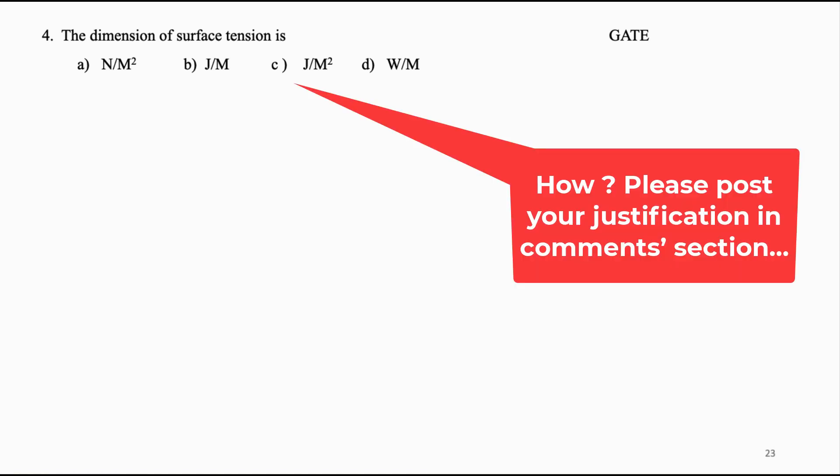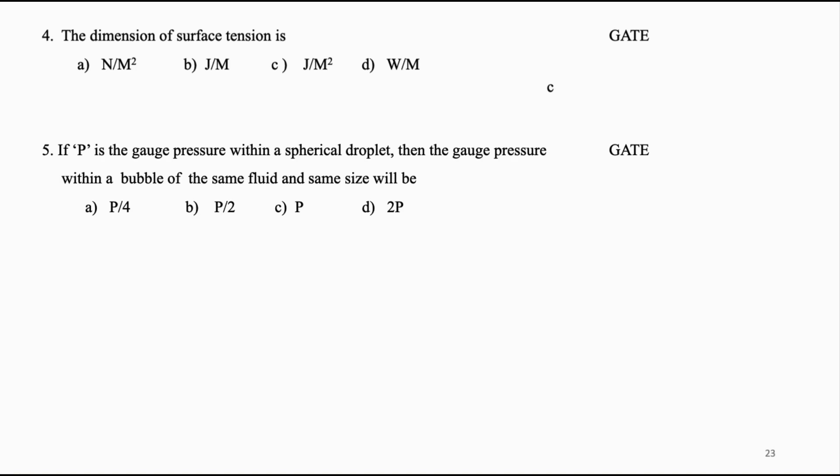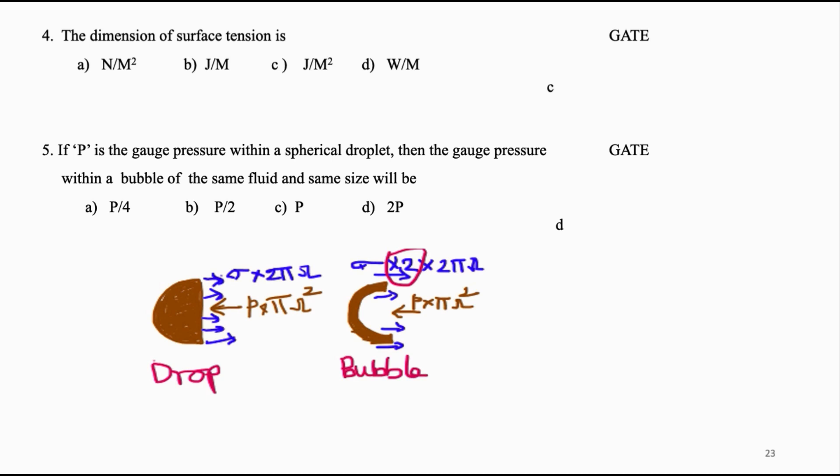The dimension of surface tension is C. If p is the gauge pressure within a spherical droplet, the gauge pressure within a bubble of the same fluid and size will be: (A) p/4, (B) p/2, (C) p, (D) 2p. A droplet has contact only on the outer surface, whereas a bubble has contact with the other fluid on both inner and outer surfaces — so the pressure is twice that of the droplet. Answer is D.